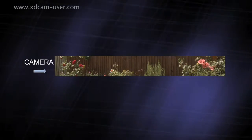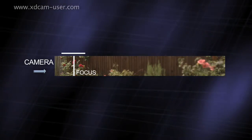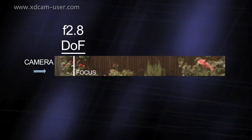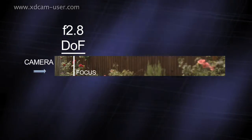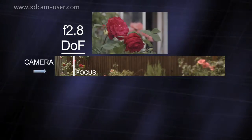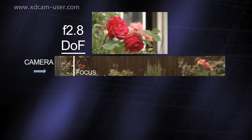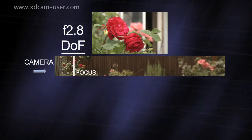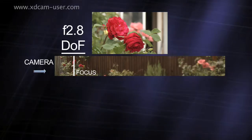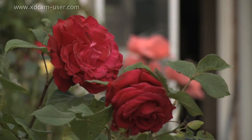The other thing the iris affects is the depth of field. When the iris is wide open at say f2.8 or even f1.9, the lens will have a shallow depth of field — only objects at the distance the focus is set to will be in sharp focus. Objects closer or further away will be out of focus. In this example, you can see that only the red flowers close to the camera are in focus, while the pink flowers in the background are blurred and out of focus.